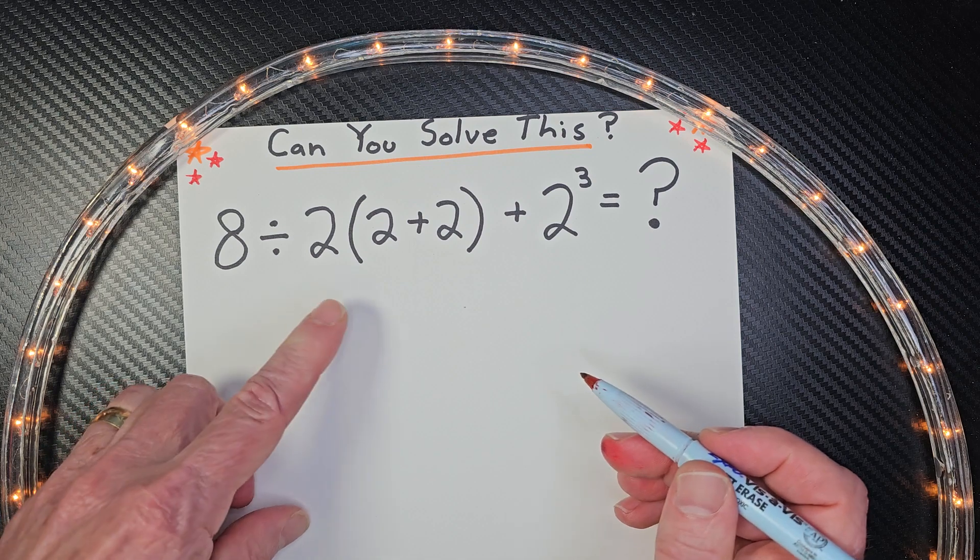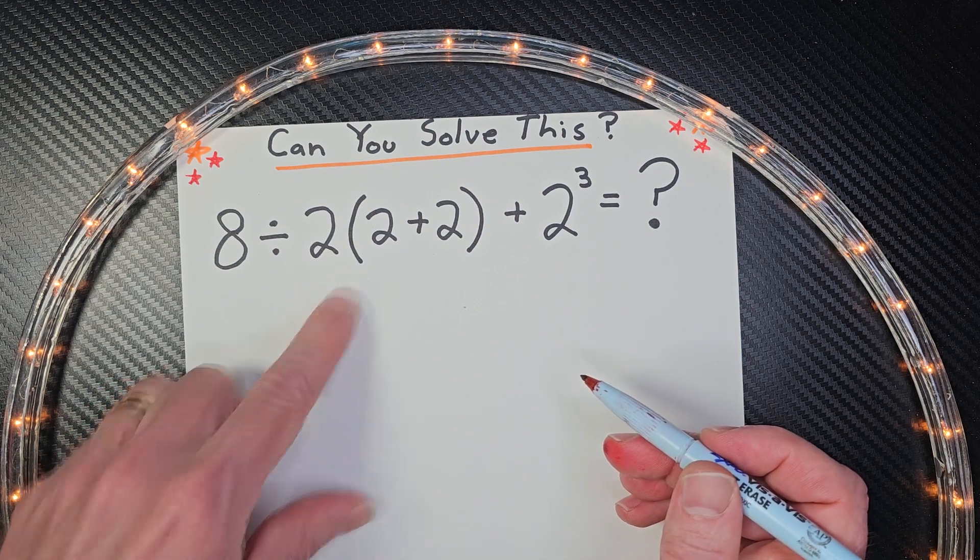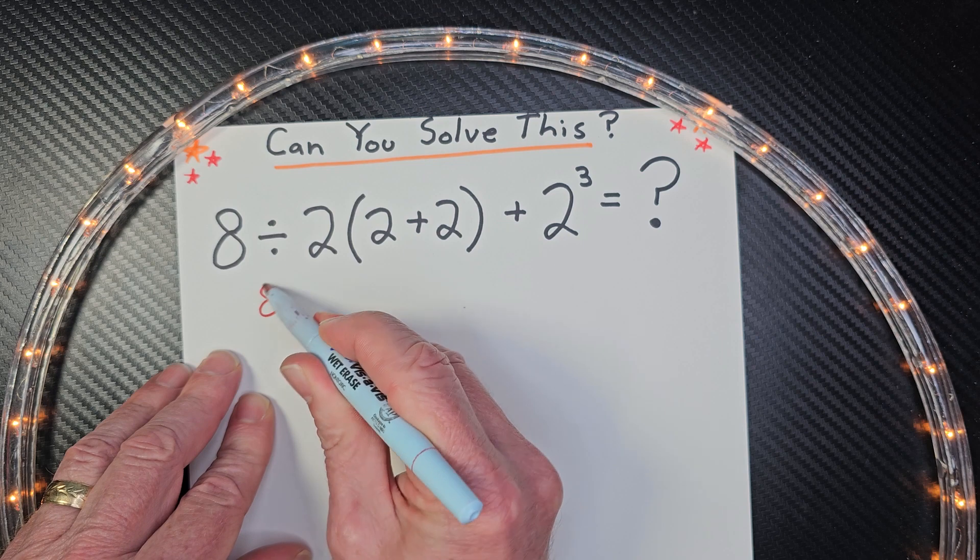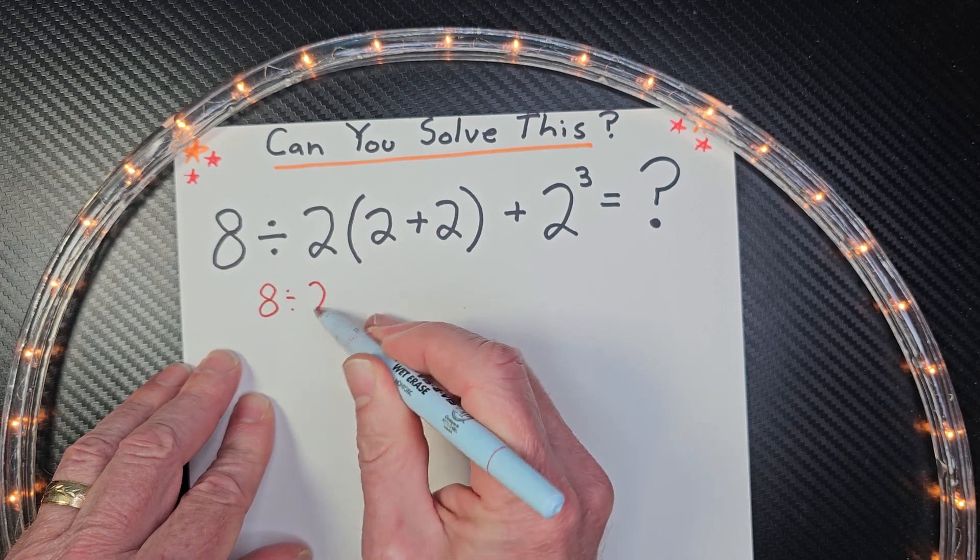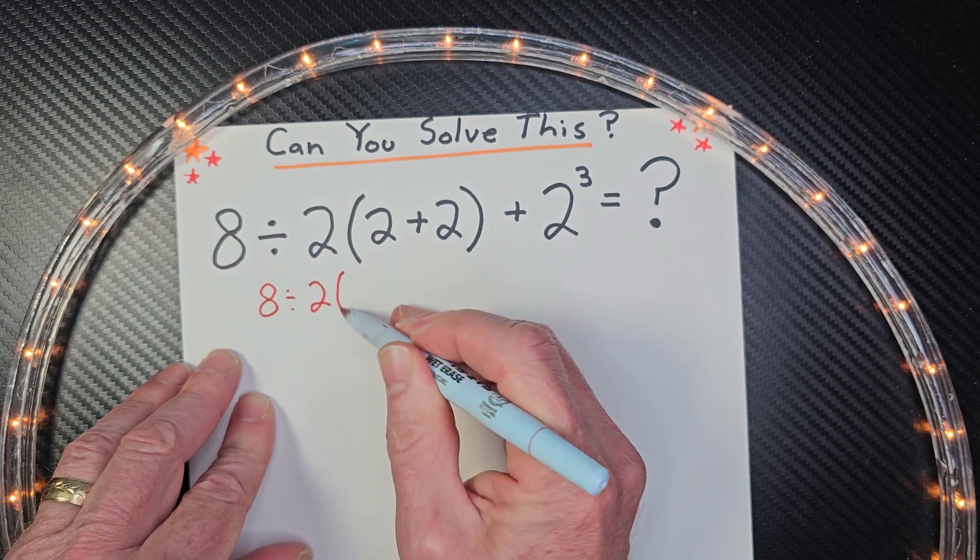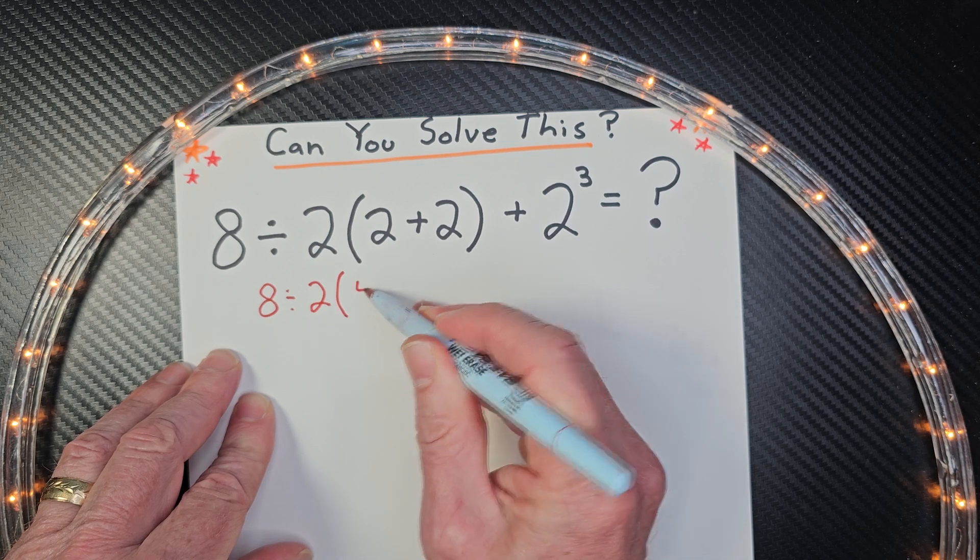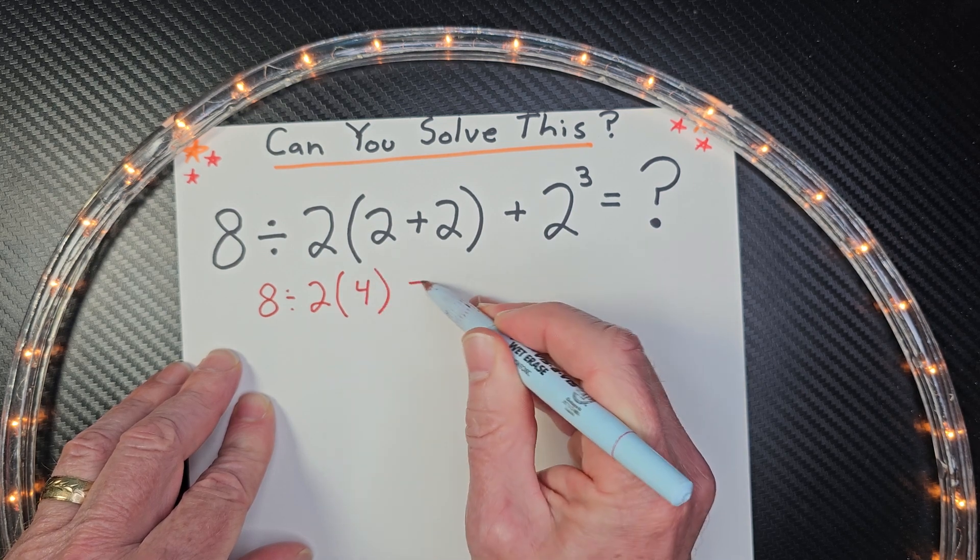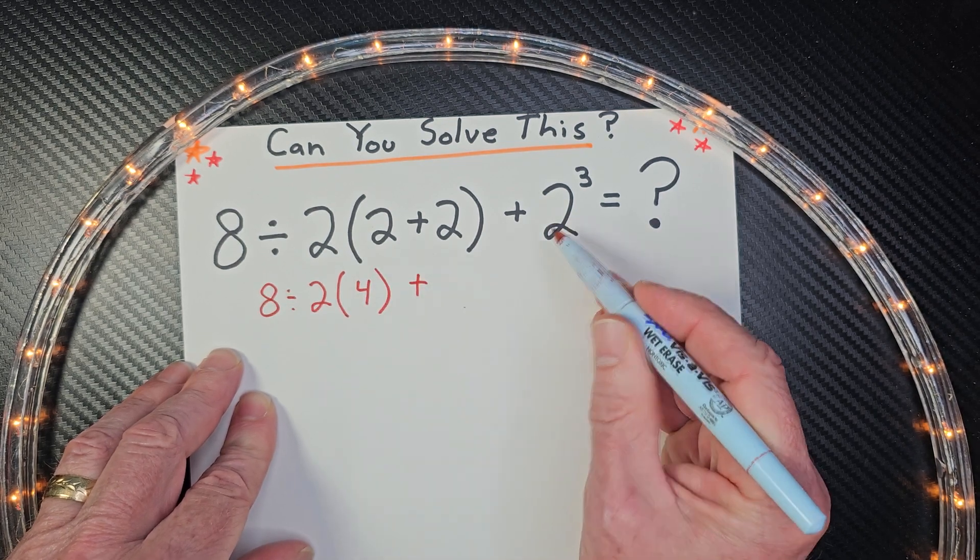All right, so remember, parentheses first. So let's go ahead and rewrite this. 8 divided by 2 times, 2 plus 2 is 4, and then plus 2 to the third power.